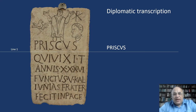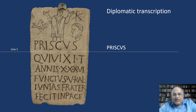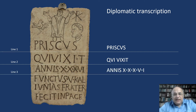Now I am going to show you how to transcribe this simple Latin text. First we have to make a diplomatic transcription, which means that we record only the characters as they appear on the inscription with minimal or no editorial intervention or interpretation. Since the letters can be clearly seen, it is an easy task. Let's do it. In the first line we find PRISCUS, in the second QVIVIXIT, and in the third ANNISXXX, which represents a number.